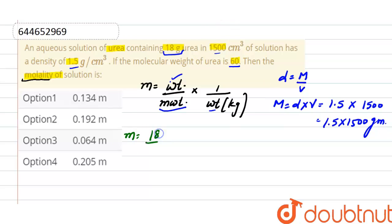equal to 18 divided by 60 into weight of solvent is 1.5 into 1500 grams. And we required it in kilograms, so we'll divide this whole mass term with 1000 because 1 kg equals 1000 grams.